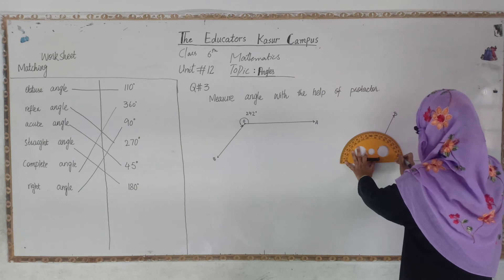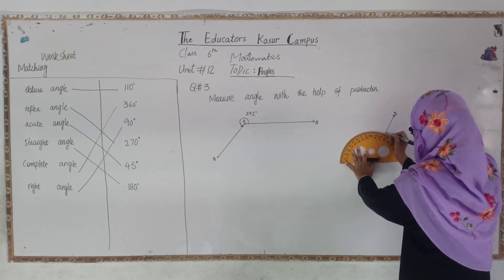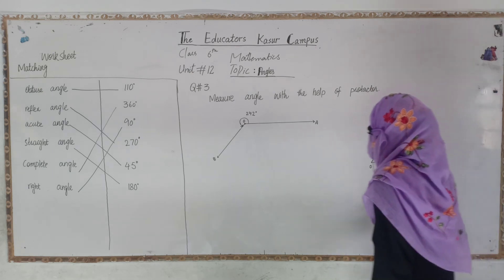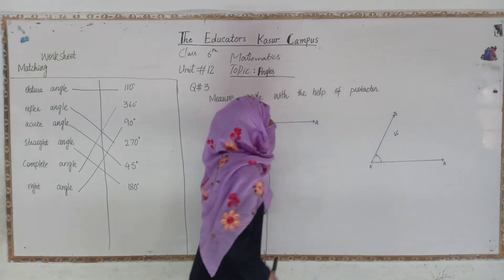Let's start reading the scale. Zero, 10, 20, 30, 40, 50, 60. After that, one, two, two lines are more. It becomes 62 degrees. Students, this is an acute angle. This is done.